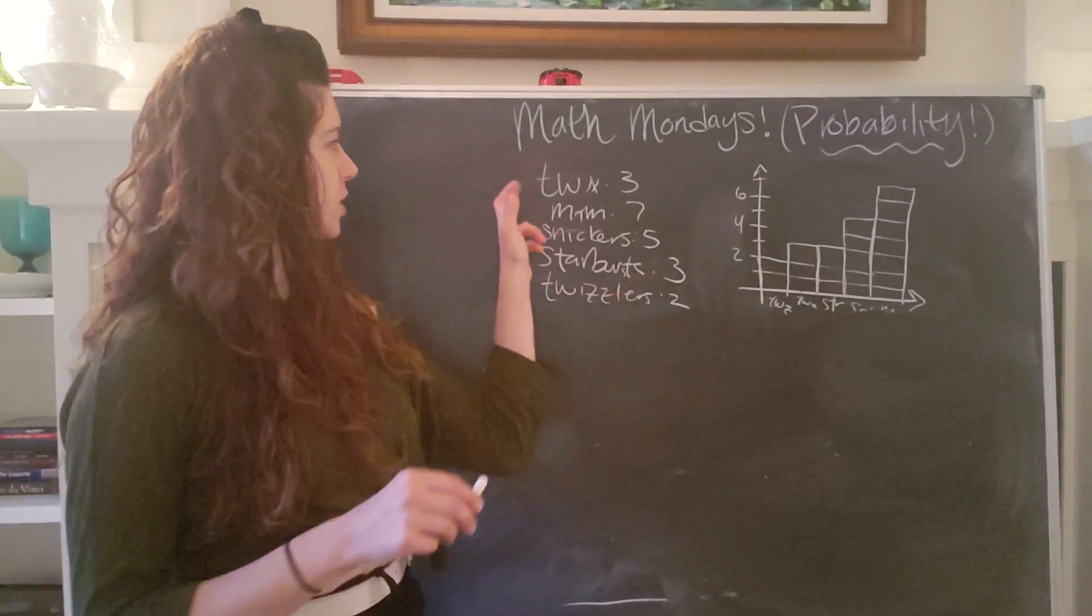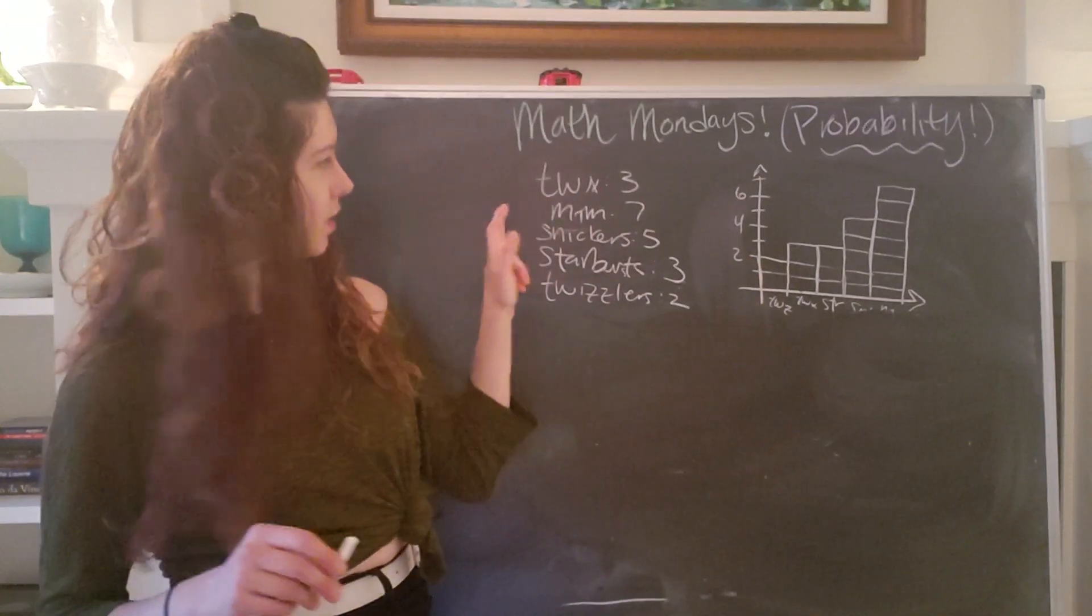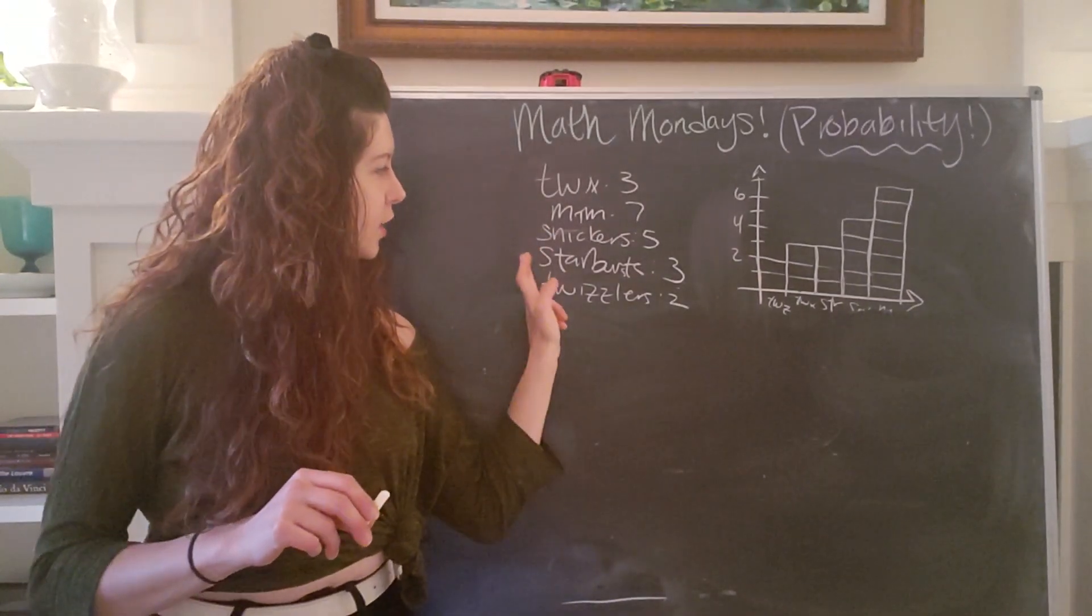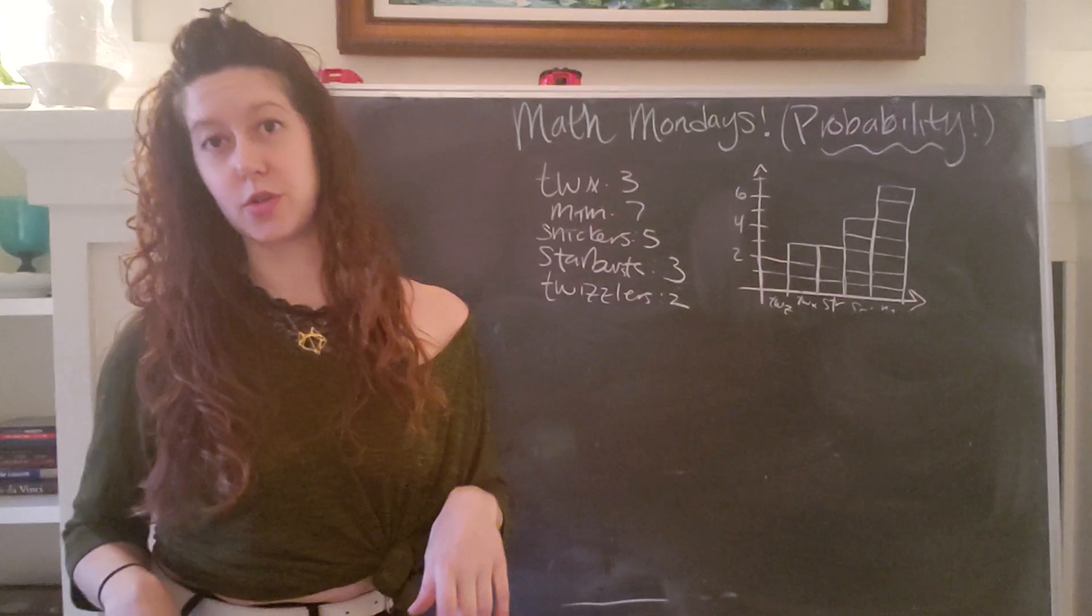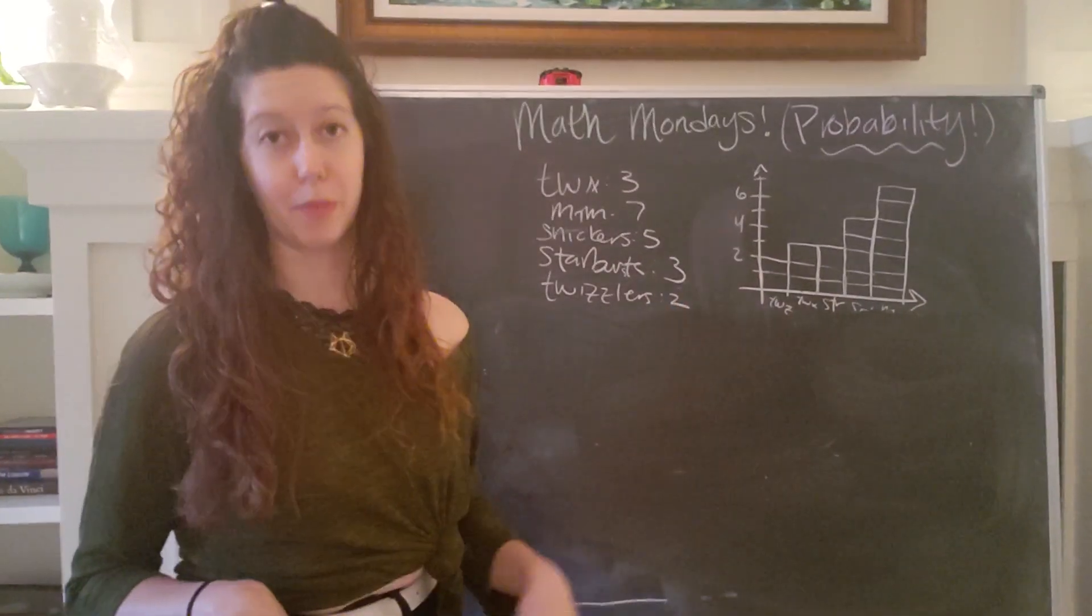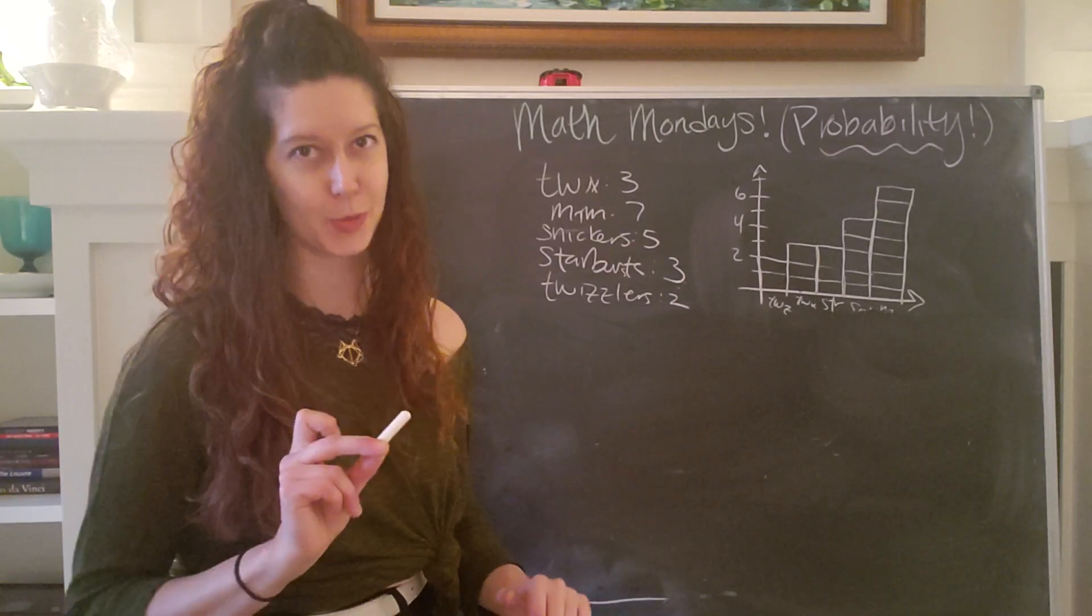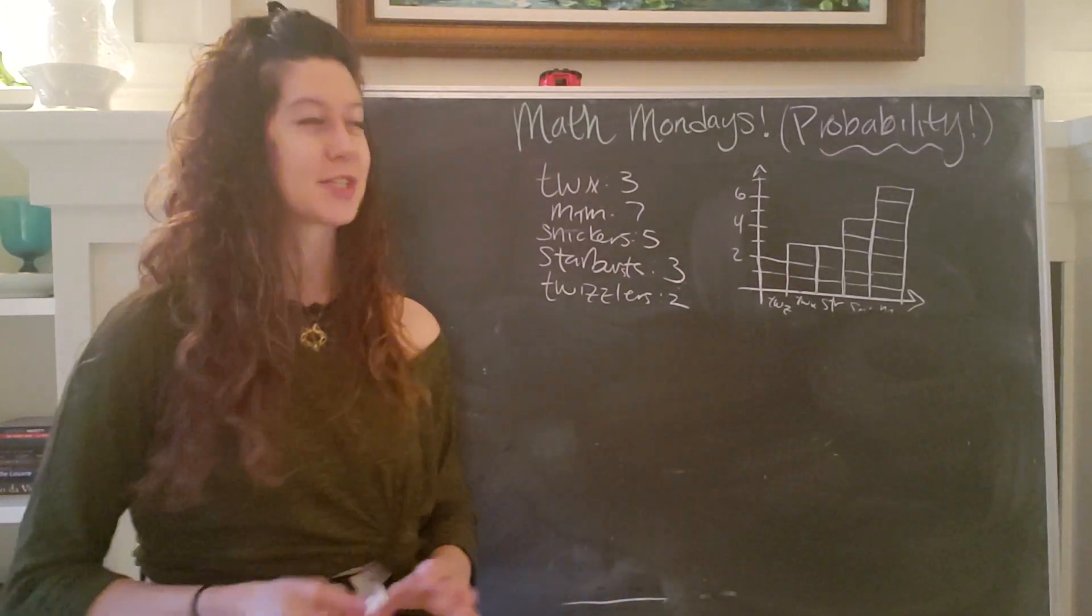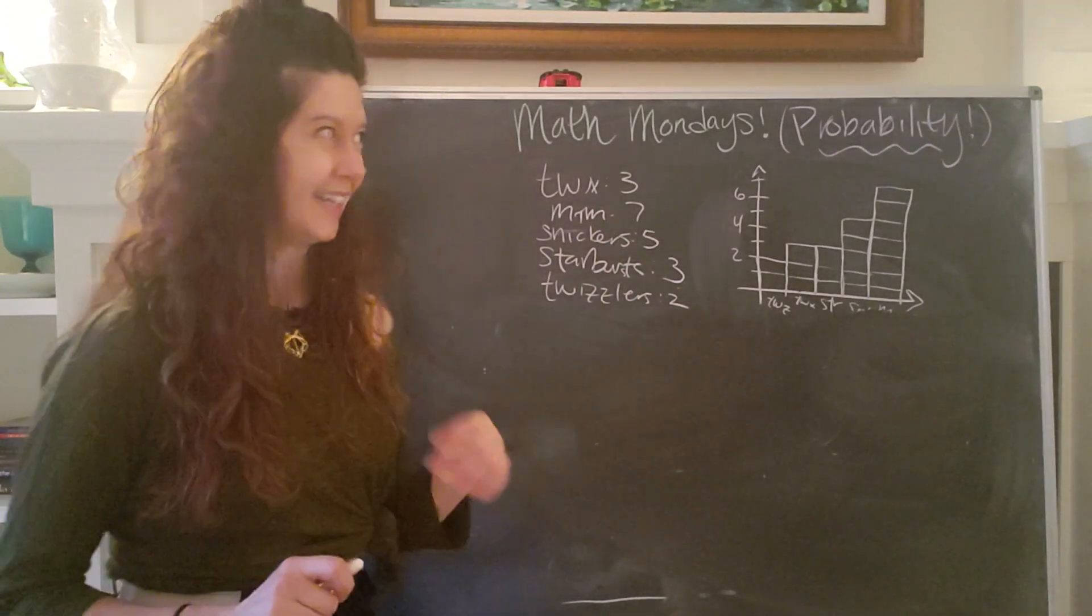And to start, we know that we have three Twix left, seven M&Ms, five Snickers, three Starbursts, and two Twizzlers. And since this is my bag of candy, having two Twizzlers left probably means that I got two Twizzlers at Halloween and have not touched them since. Some of y'all might like Twizzlers, not me.